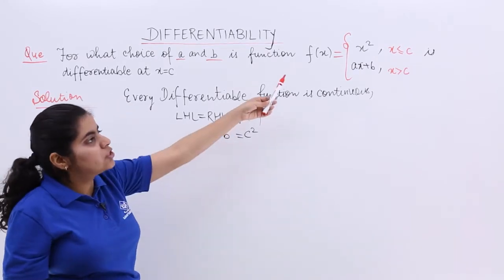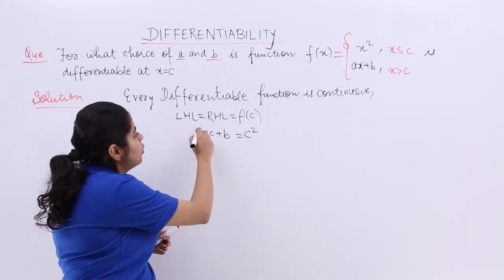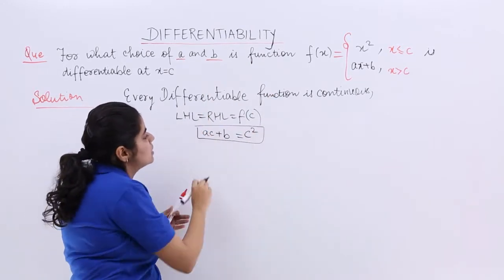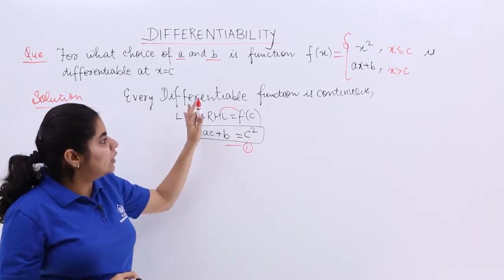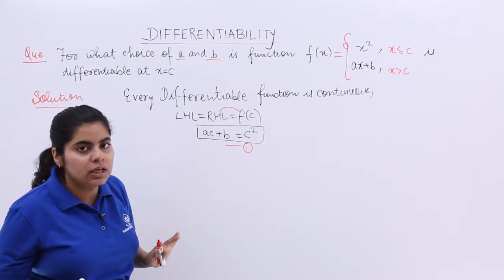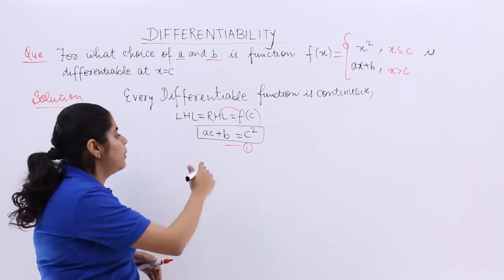And LHL will be what? LHL will be again c square only. Let us not use that. So, I have one equation c square is equal to Ac plus B comparing these two things. Now, continuity has given me one equation.